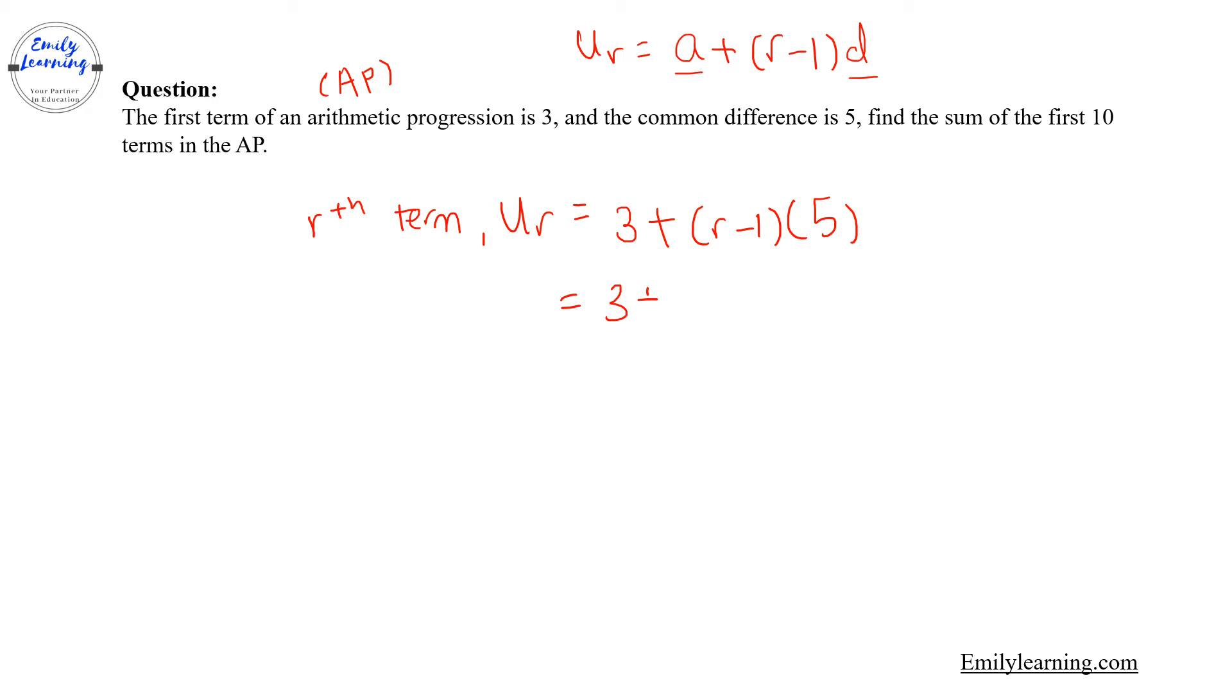So if I were to simplify it, I have 3 plus 5r minus 5, so it equals 5r minus 2.